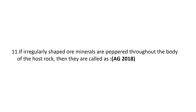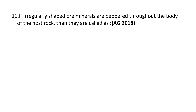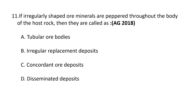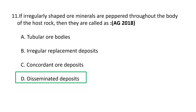Next question. If irregularly shaped ore minerals are dispersed throughout the body of the host rock, then they are called: A. Tubular ore bodies, B. Irregular replacement deposits, C. Concordant ore deposits, D. Disseminated deposits. The correct answer is D — Disseminated deposits.